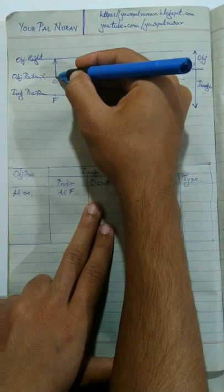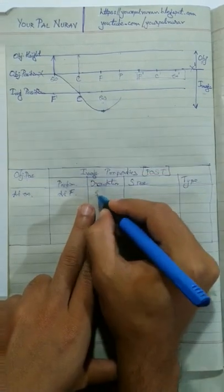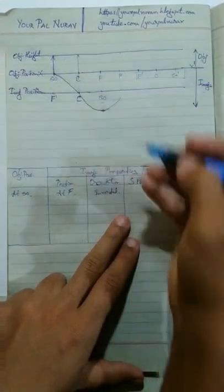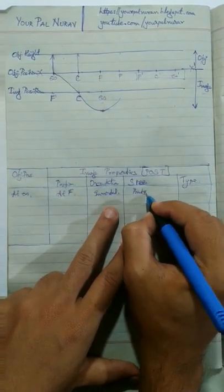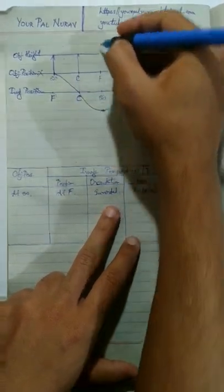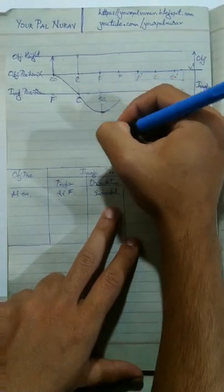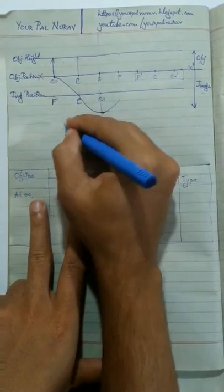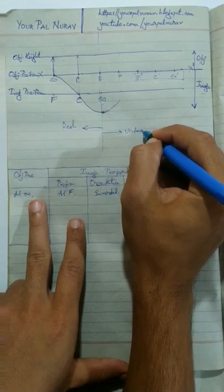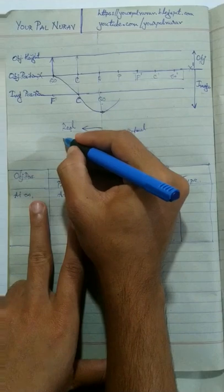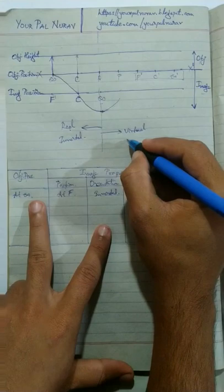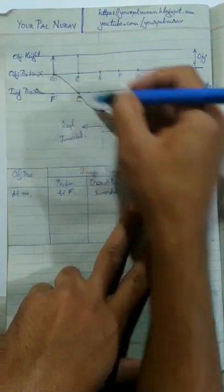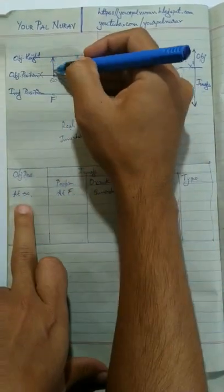Orientation: the image is being formed below the line, so it is inverted. Size: the image is point-sized, so we write point-sized or highly diminished. Type: the vertical bifurcating line — the line at infinity — divides the graph into the real region on the left and the virtual region on the right. The image is formed to the left of this line, therefore it is real. So when the object is at infinity: position at F, orientation inverted, size point-sized, type real.